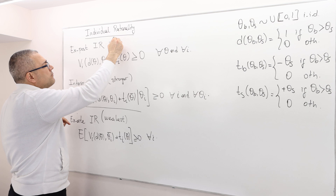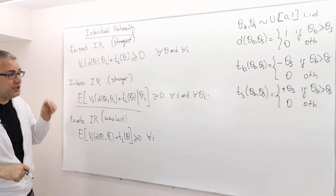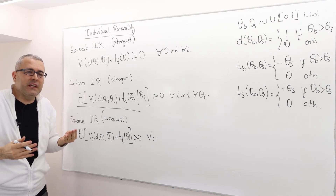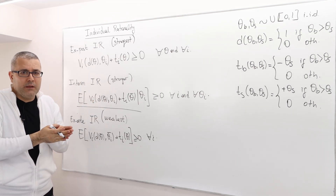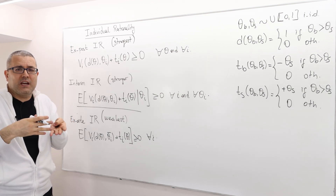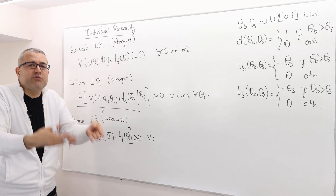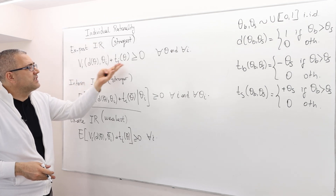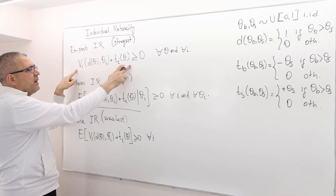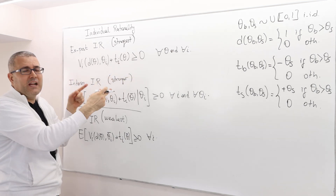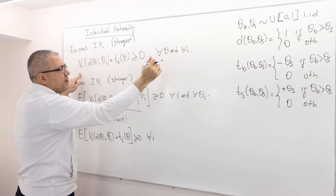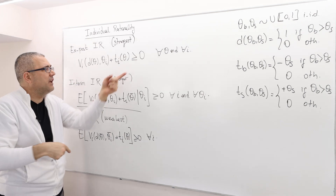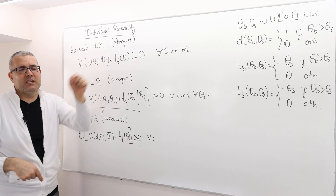The strongest individual rationality concept is ex-post individual rationality. Basically, the mechanism is over: you know your type and you also learned your opponent's type, so all information has been revealed. Do you now regret participating? If all agents say no — meaning by participating they received a non-negative payoff — for every agent and for every realization of both player i's type and the opponent's type, we call the mechanism ex-post individual rational.